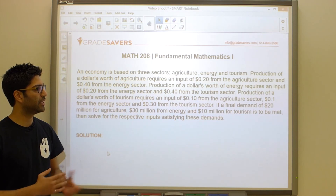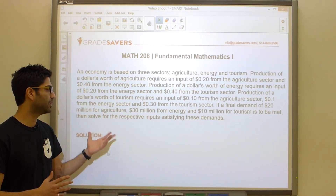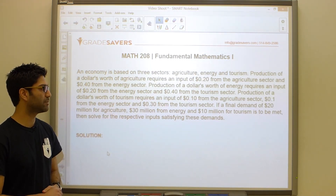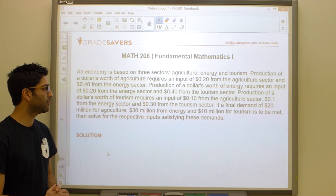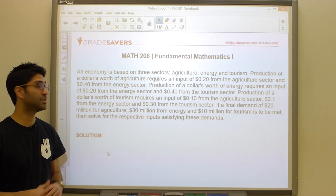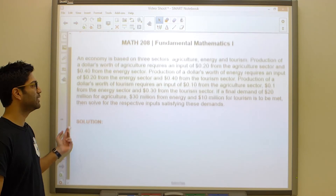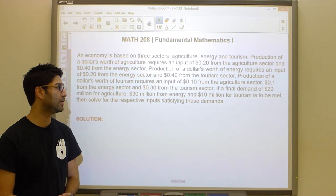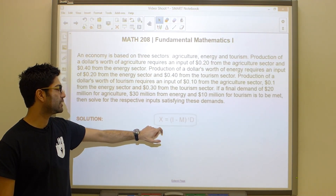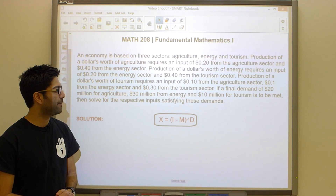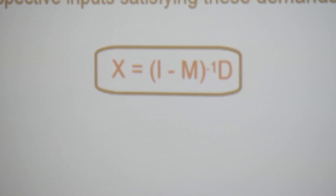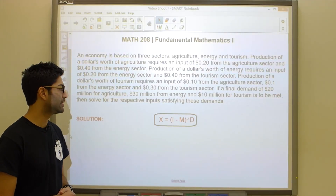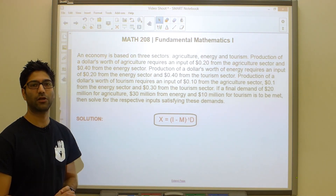On an exam, this problem is sometimes broken into parts A, B, and C. We're really only asked for the last part — finding the inputs — but to solve that we have to do parts A and B regardless. The first thing we're going to do is set up a matrix. There's a formula we must apply to get the answer: X equals I minus M, inverse, times D. This is how we solve for X. Let's go through it step by step.